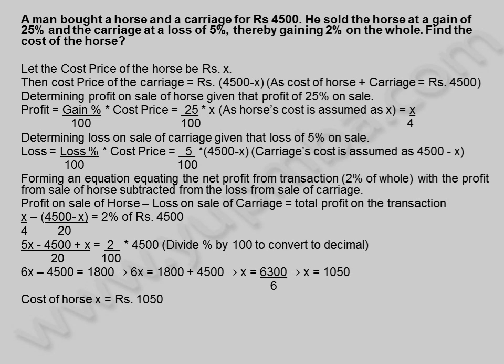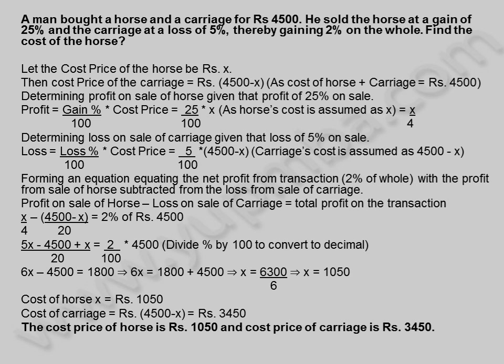X equals 6,300 by 6, which equals 1,050. Cost of horse X is equal to Rs. 1,050. Cost of carriage is equal to 4,500 minus X, which equals Rs. 3,450. Therefore, the cost price of horse is Rs. 1,050 and cost price of carriage is Rs. 3,450.